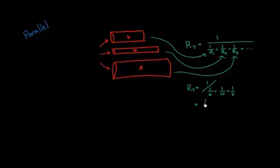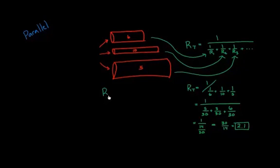And the common denominator there is 30. So I could say 5 thirtieths. This is 3 thirtieths. And this would be 6 thirtieths. And adding that up together, I get 1 over 14 thirtieths or 30 over 14, which is 2 and 0.1. So 2.1. So the total resistance here is 2.1, putting all three of these together. Pretty interesting.